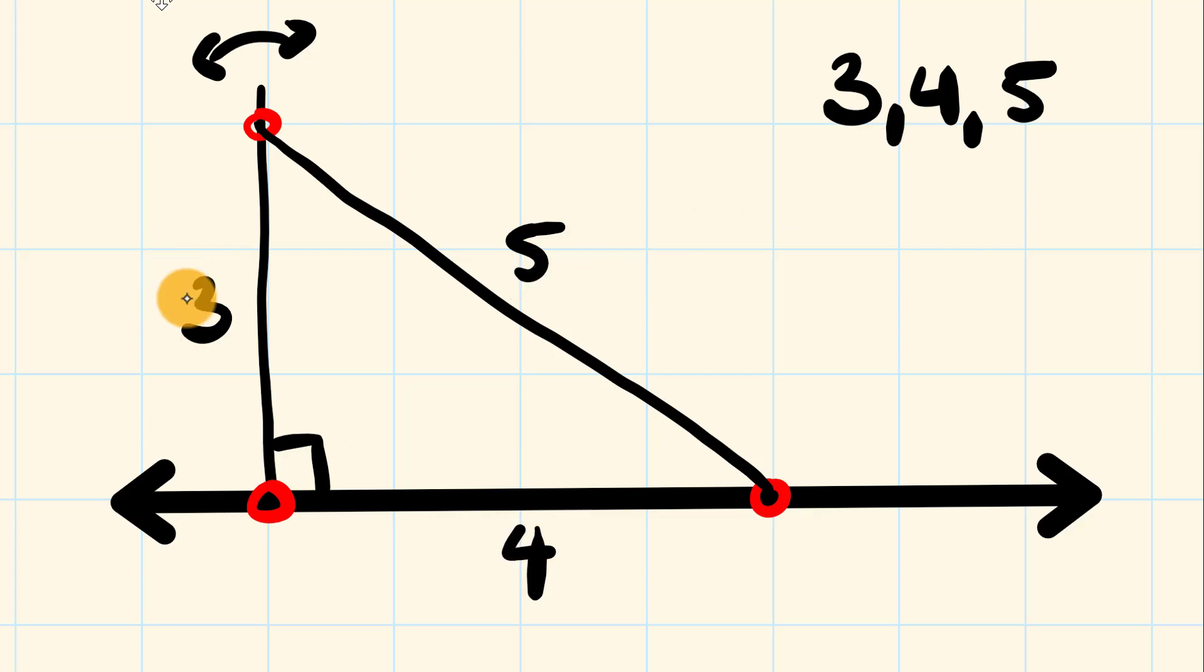When this three and this four and this five is exactly right, this part down here is 90 degrees. So, how would you go through and do this if you were all by yourself?